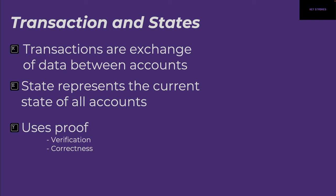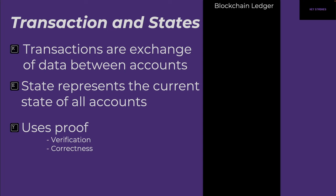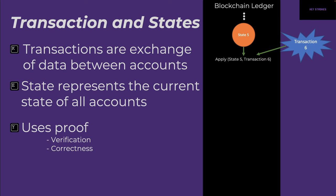If a transaction happens, that creates a new state in the blockchain. Aptos uses proofs to make sure that transactions and states are verified and correct. Looking at a visual: on the right, that's our blockchain ledger. We have some state — let's say state 5 — and then some transaction happens, say transaction 6. That state 5 and transaction 6 are used by a method called 'apply,' which is part of the blockchain, and this creates a new state, let's say state 6.